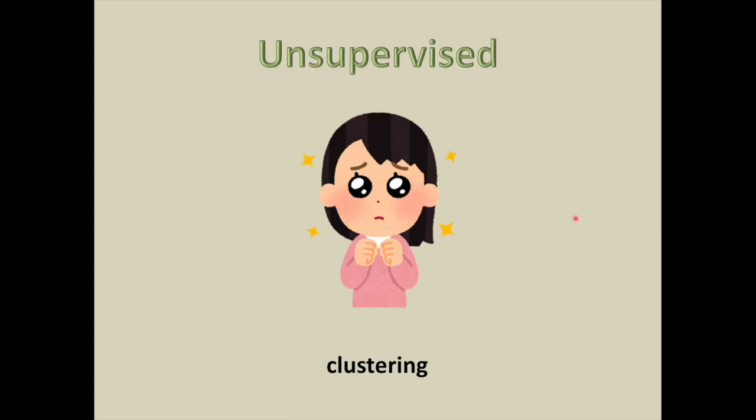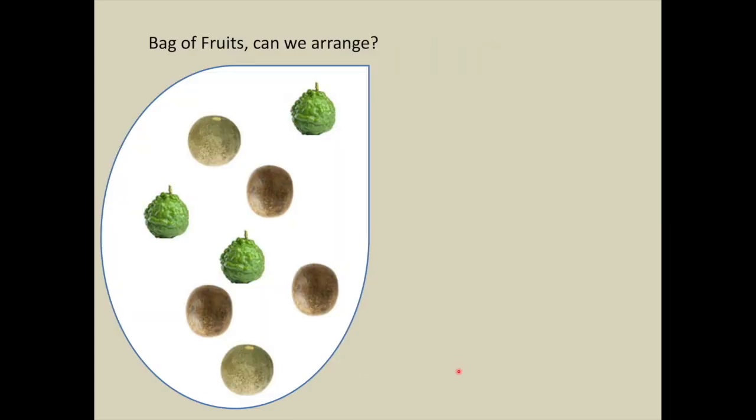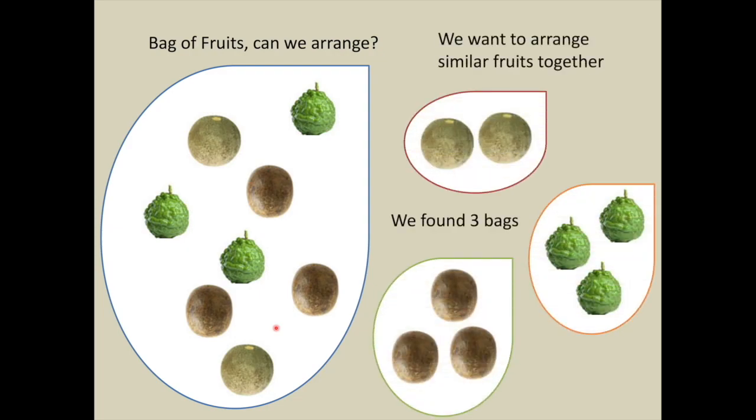Clustering. The word clustering is preferably used for unsupervised learning case. Let us see this with the help of an illustration. A bag of fruits is given. We may not be able to recognize the fruits, however can we arrange them? Basically, we want to arrange similar fruits together in one bag and different ones apart. If we do this arrangement, then we found three distinct bags. This arrangement is called clustering.